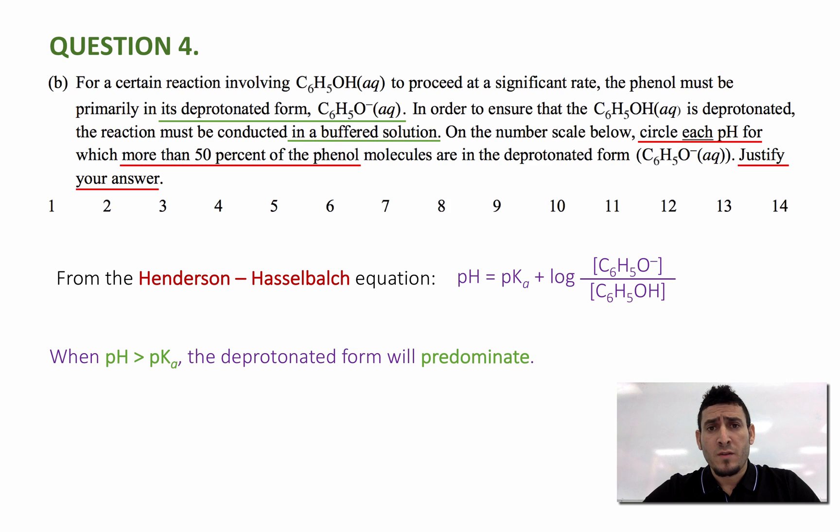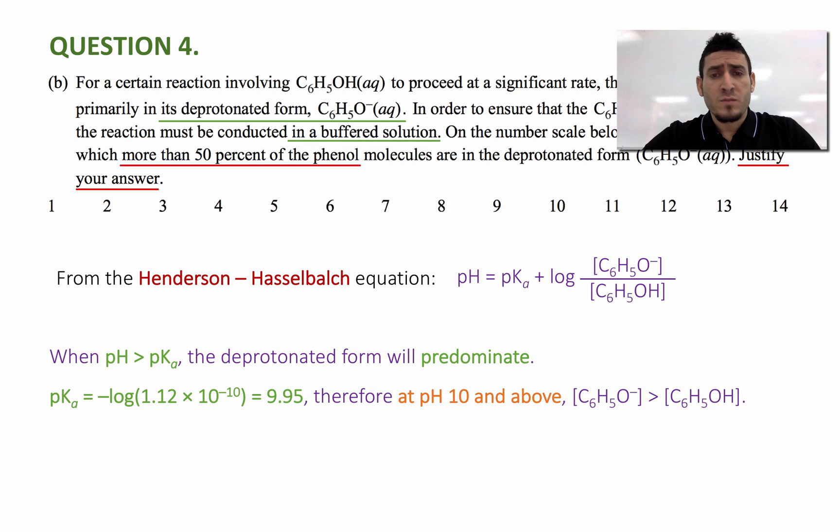We can calculate the value of pKa from the Ka. So pKa equals minus log base 10 of Ka. It's equal to minus log of 1.12 times 10 to the power minus 10, which is equal to 9.95. Therefore, at pH 10 and above, which is higher than the pKa, the concentration of phenolate, which is the deprotonated form, will be greater than that of phenol.